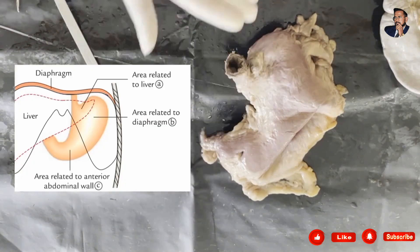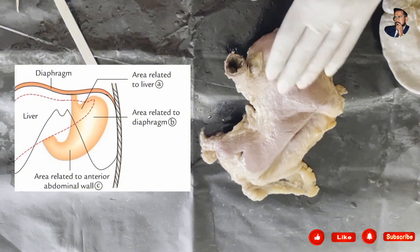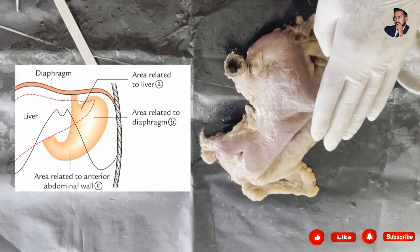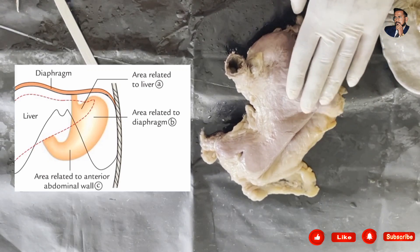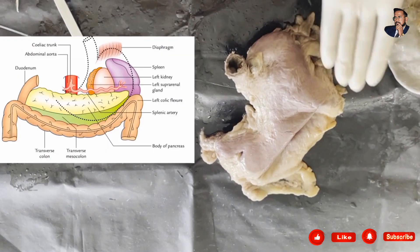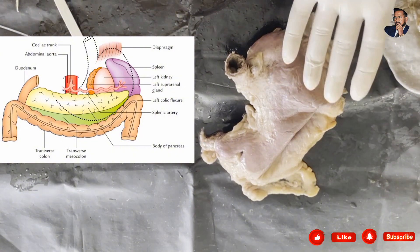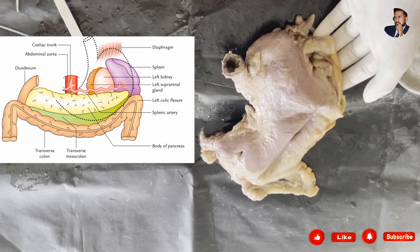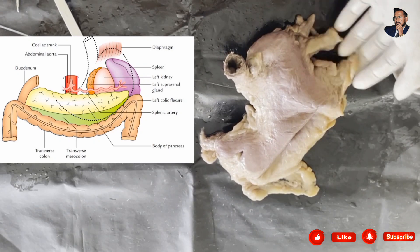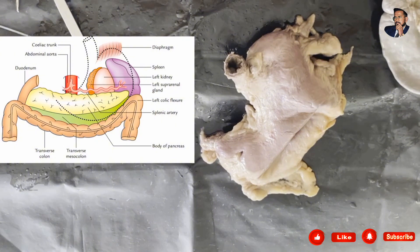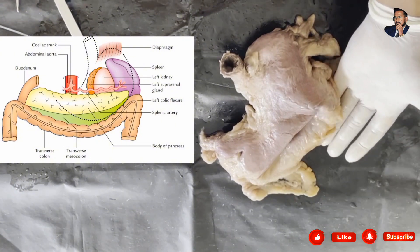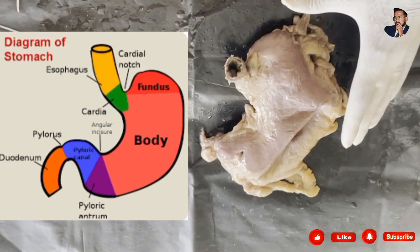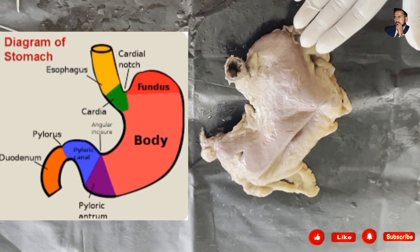We have to know the relations — anterior and posterior. Anteriorly, the stomach is related with the anterior abdominal wall, the diaphragm, and the left lobe of the liver. Posteriorly, it is related with the diaphragm, the spleen, the left kidney, the left suprarenal gland, the left colic flexure, the splenic artery, and the body of the pancreas and transverse colon.